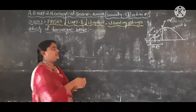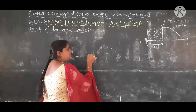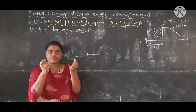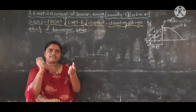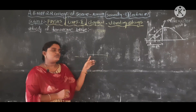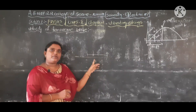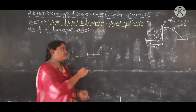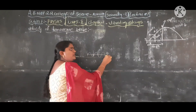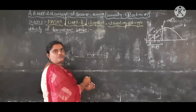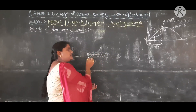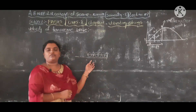These transverse waves are produced when the string is fixed at two ends. The string is fixed at two ends and an external frequency is applied. The transverse wave produces vibrations, and since the other end is also fixed, the wave is reverse-propagated in the form of a transverse wave.